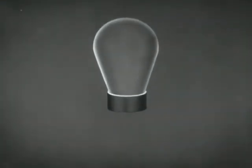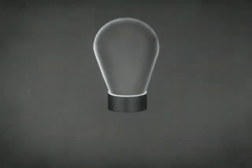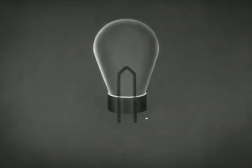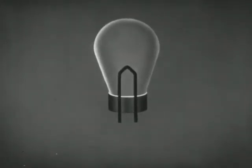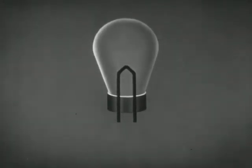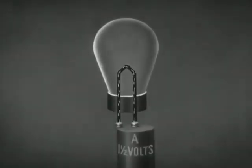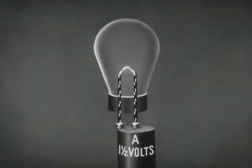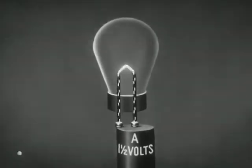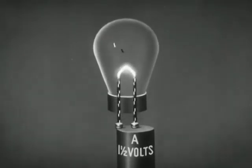First, let us consider how a three-element vacuum tube, the triode, operates. A tungsten filament extends into a tube such as this. A cell supplies a current which heats the filament. When the filament gets hot enough, electrons are emitted.